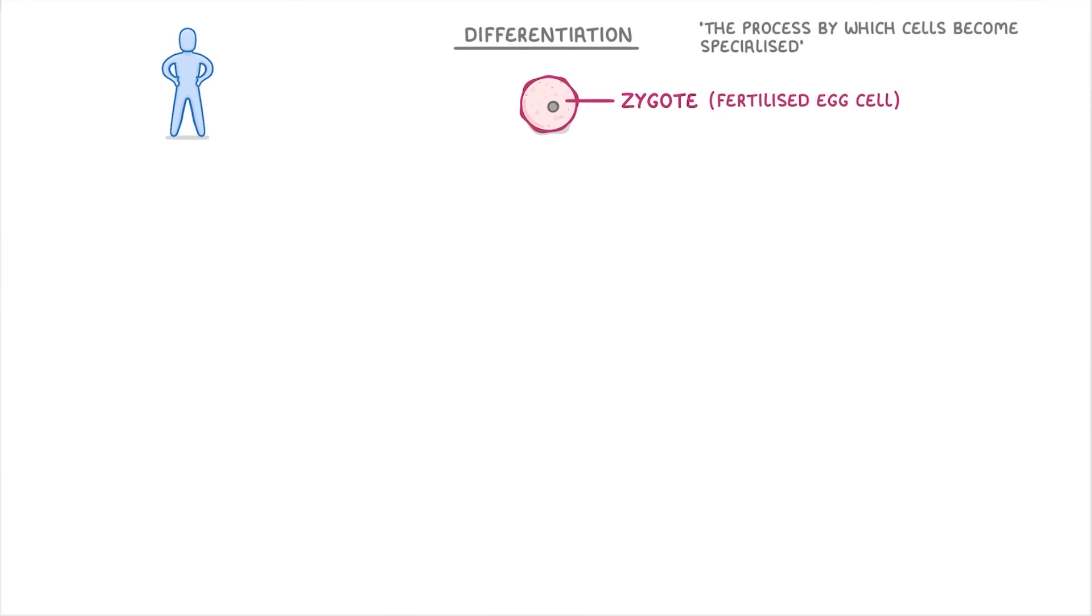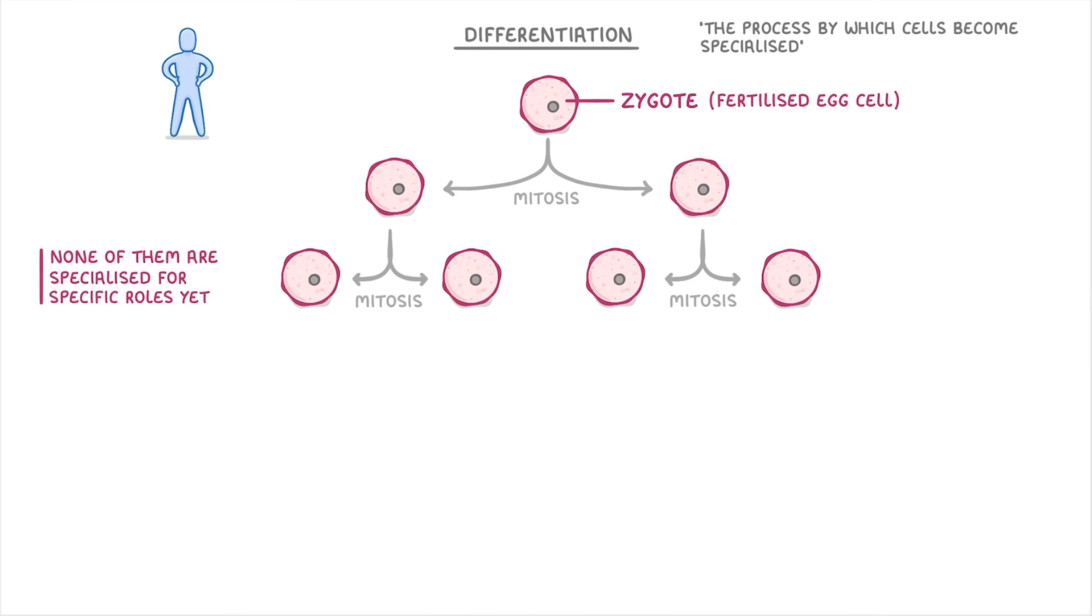This single cell then divides by mitosis into two cells, which in turn divide into four cells, and so on. At this point though, the cells are all identical, and none of them are specialized for specific roles yet.